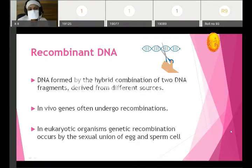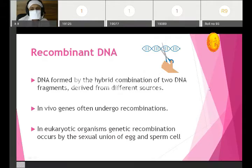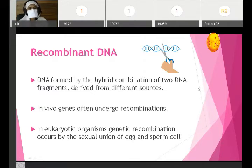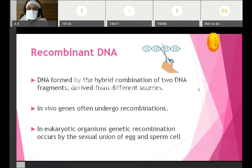For recombinant DNA, this DNA is formed by the hybrid combination of two DNA fragments derived from different sources. We take DNA of two different things and combine it — that is hybrid combination. In vivo, genes often undergo recombination — that is the natural process. Embryo formation is one example of in vivo recombination.